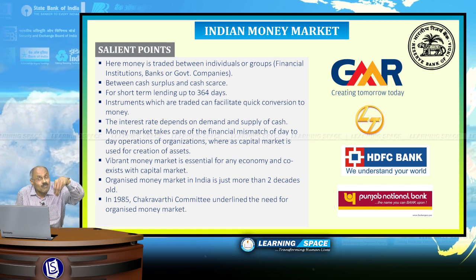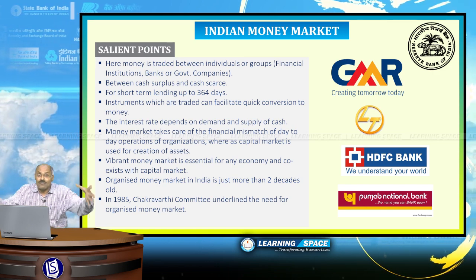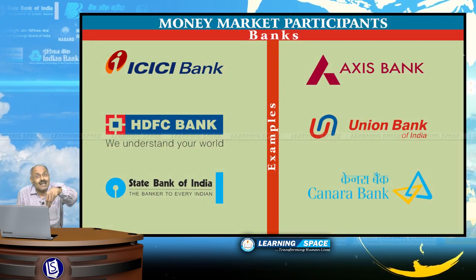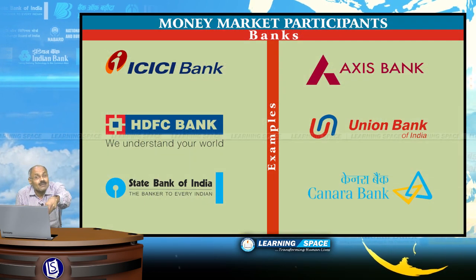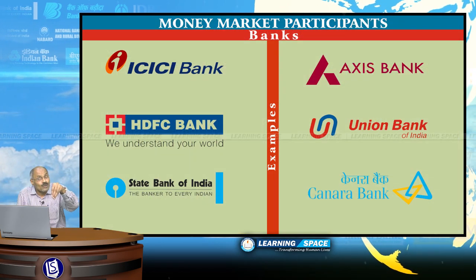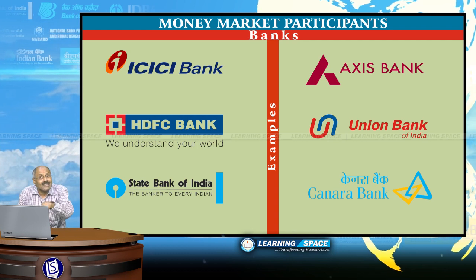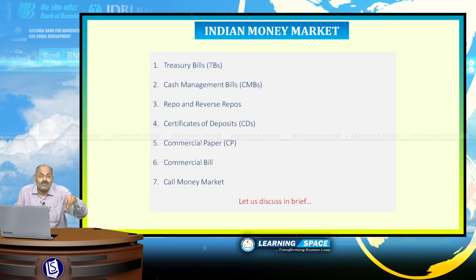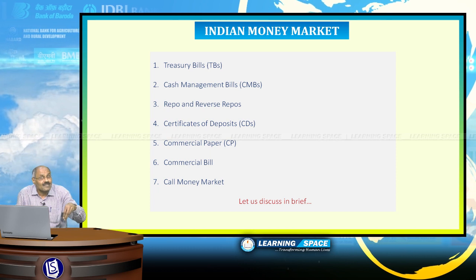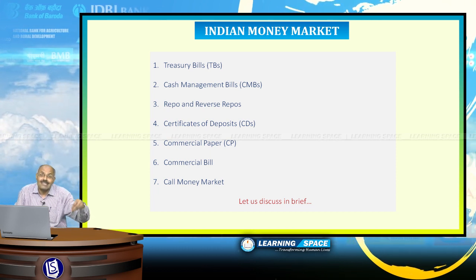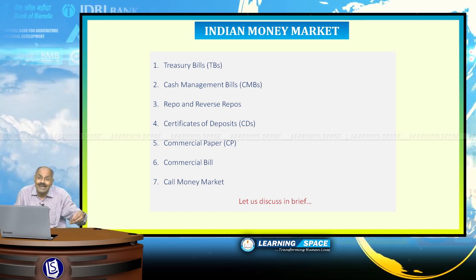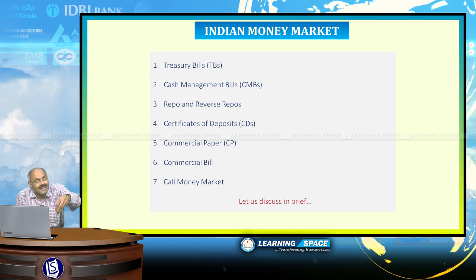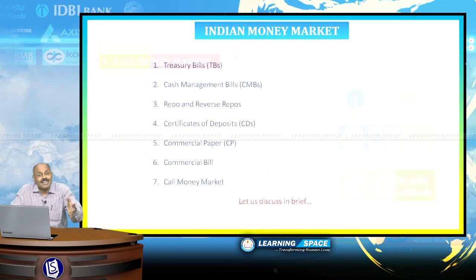Money market participants are basically financial institutions and banks. The various types of Indian money market instruments are: treasury bills, cash management bills, repo and reverse repo, certificate of deposit, commercial paper, commercial bill, and the most important one — the call money market.